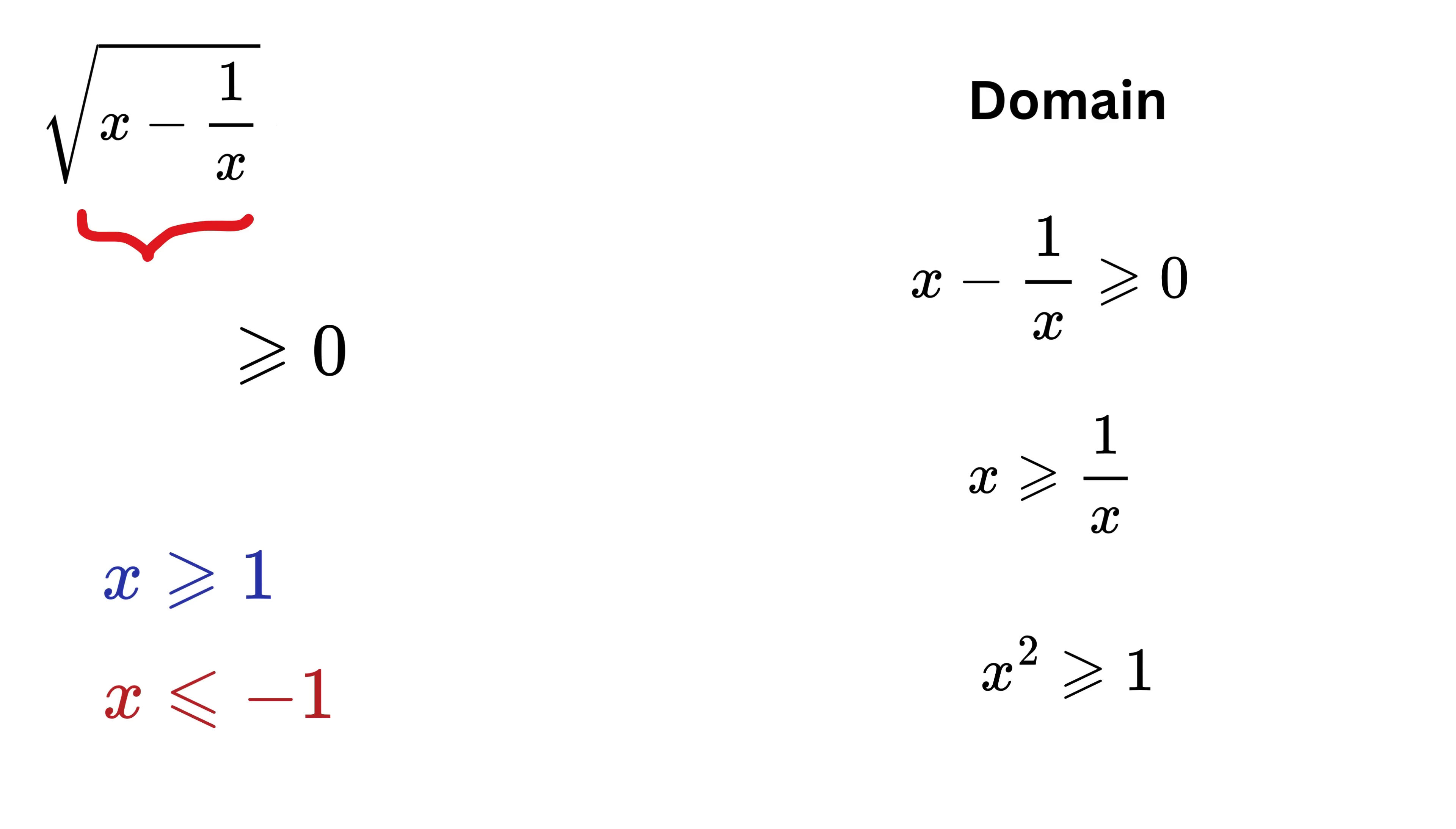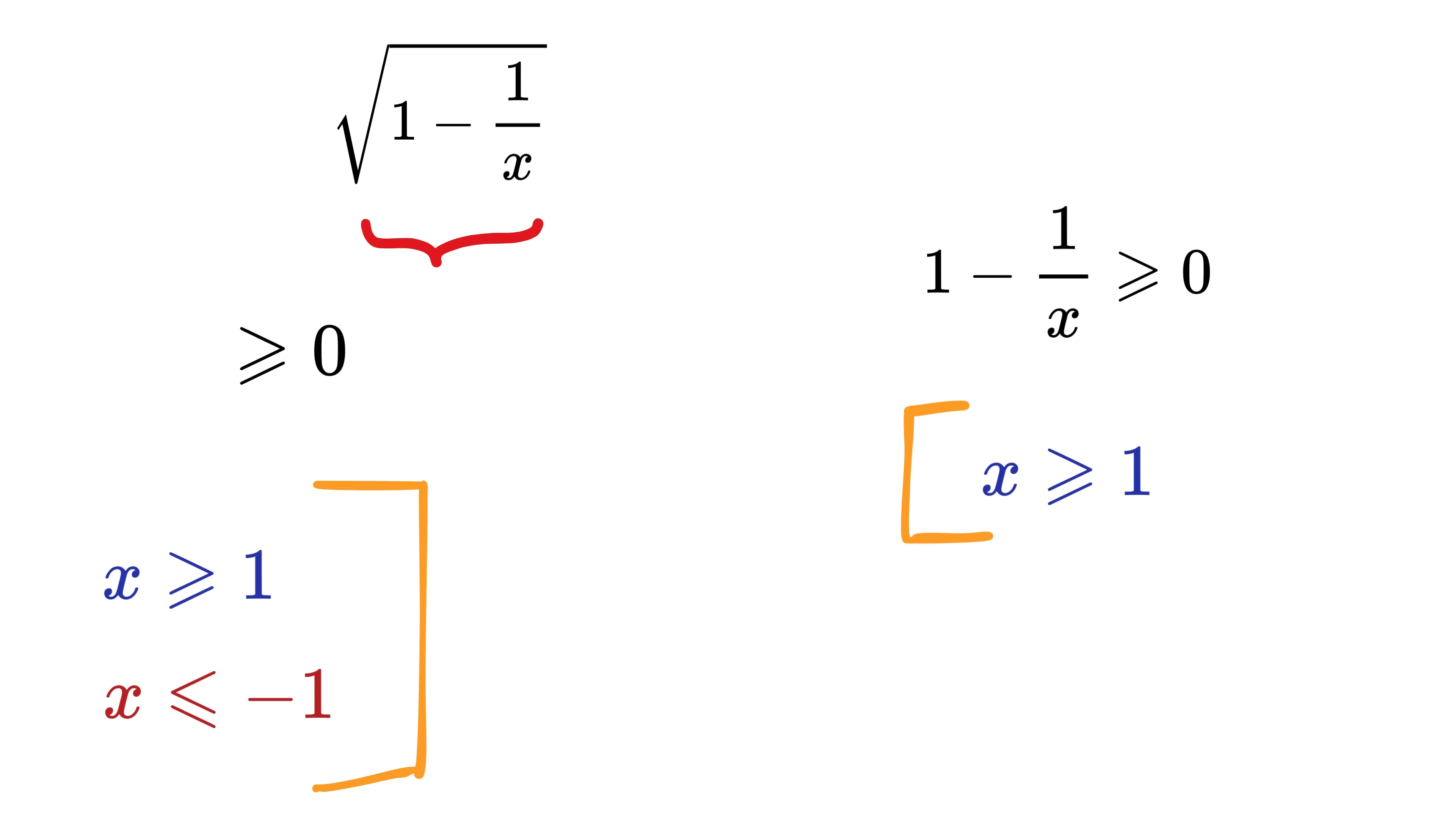Similarly, 1 minus 1 over x must be greater than or equal to 0, which gives x greater than or equal to 1. Therefore, combining both conditions, the domain of this equation is all real values of x greater than or equal to 1.